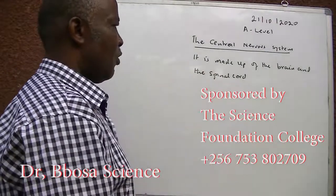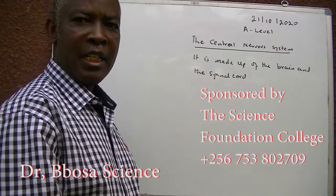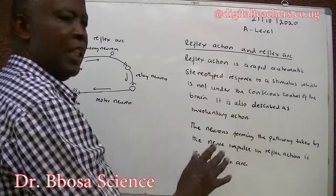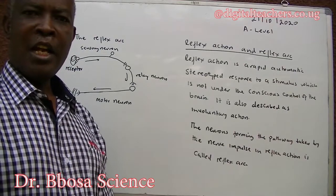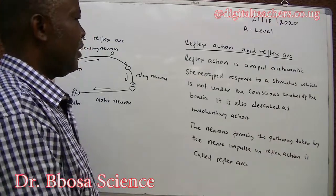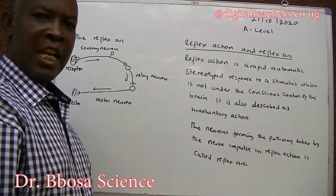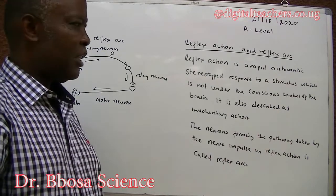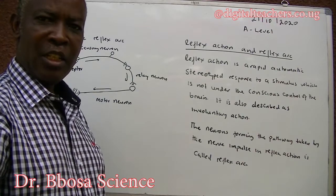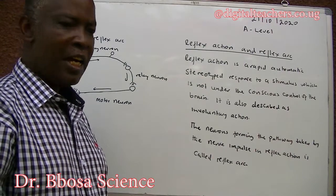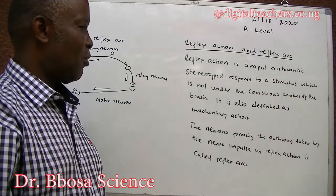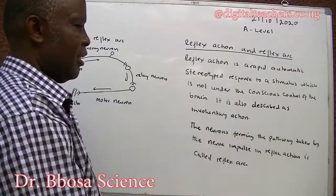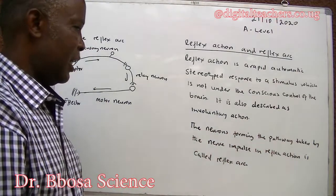The central nervous system is made up of the brain and the spinal cord. Reflex action is a rapid, automatic, stereotyped response to a stimulus which is not under the conscious control of the brain. It is also described as involuntary action.